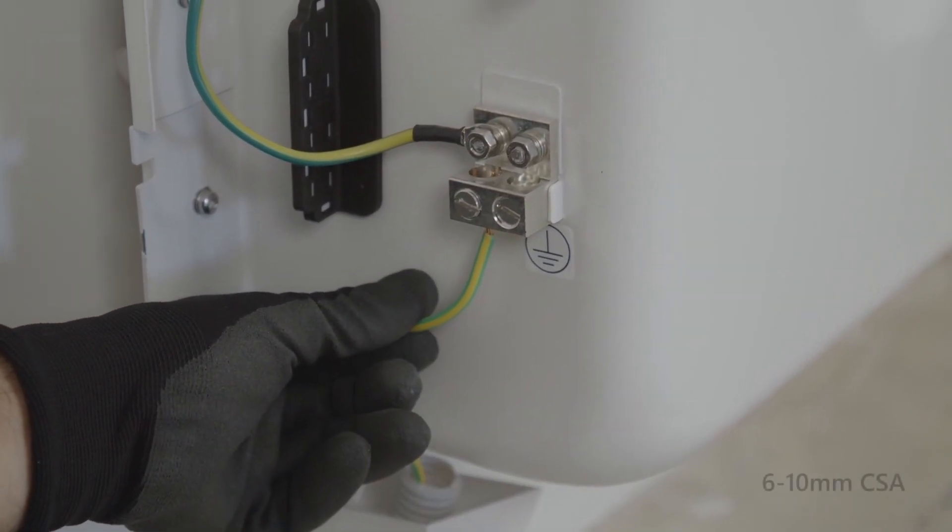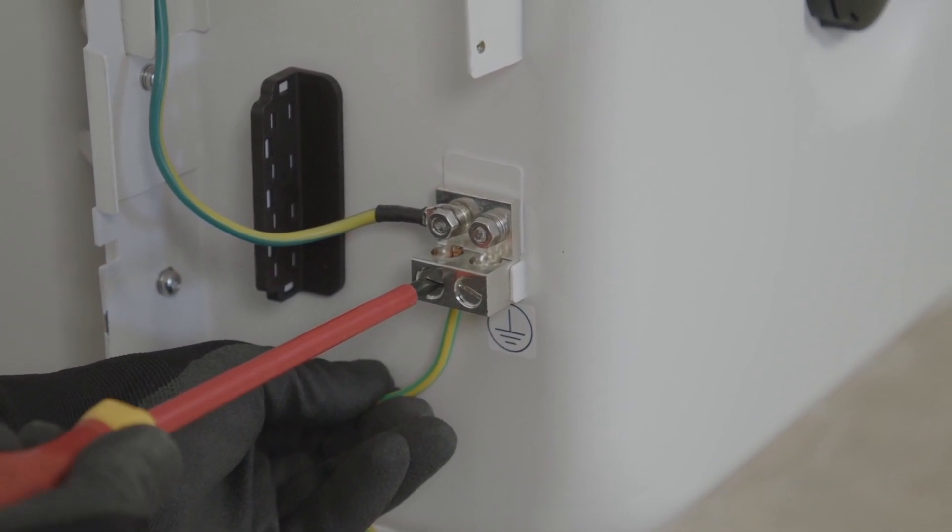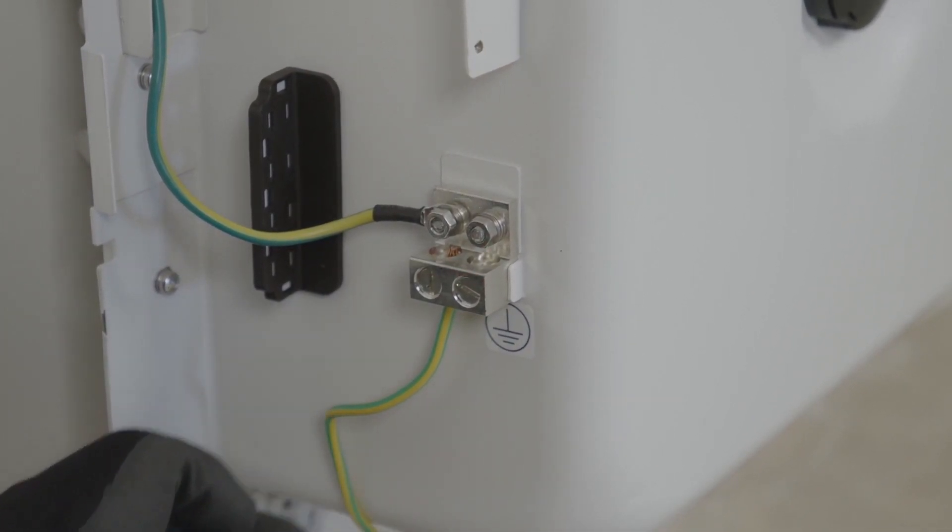Simply wire the earth to the earth terminal bar using either 6 to 10mm CSA cable. You'll notice that the earth terminal has two fixings, that's for if two batteries are being paralleled together.